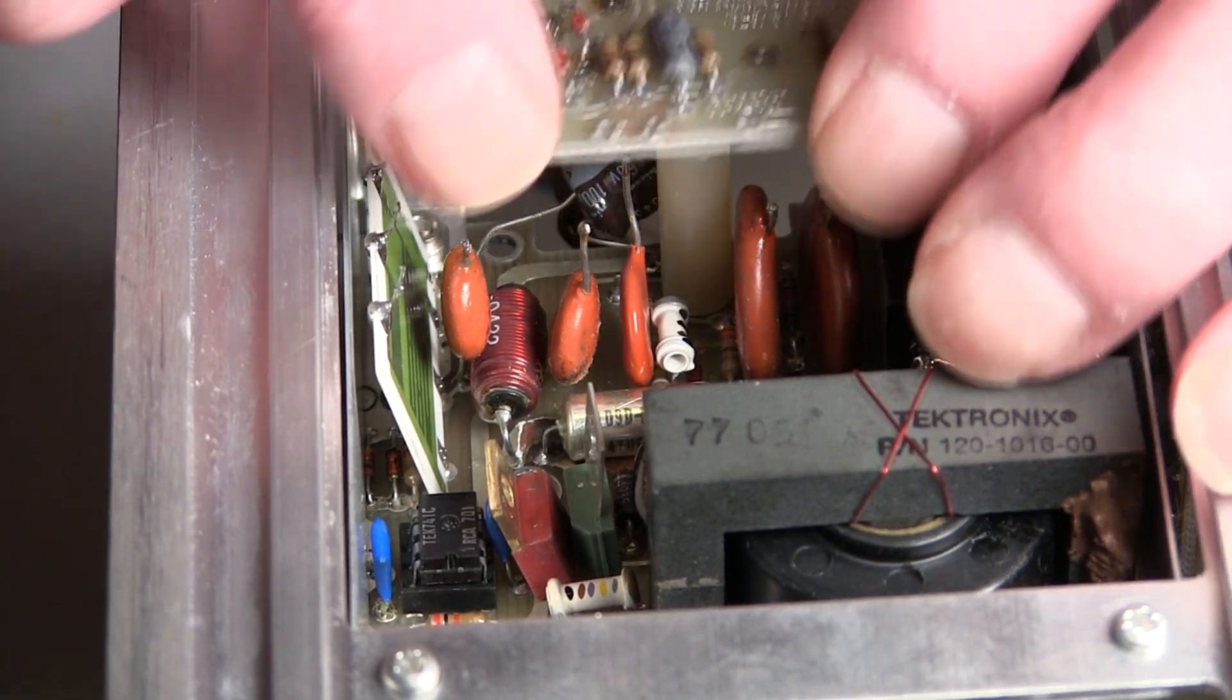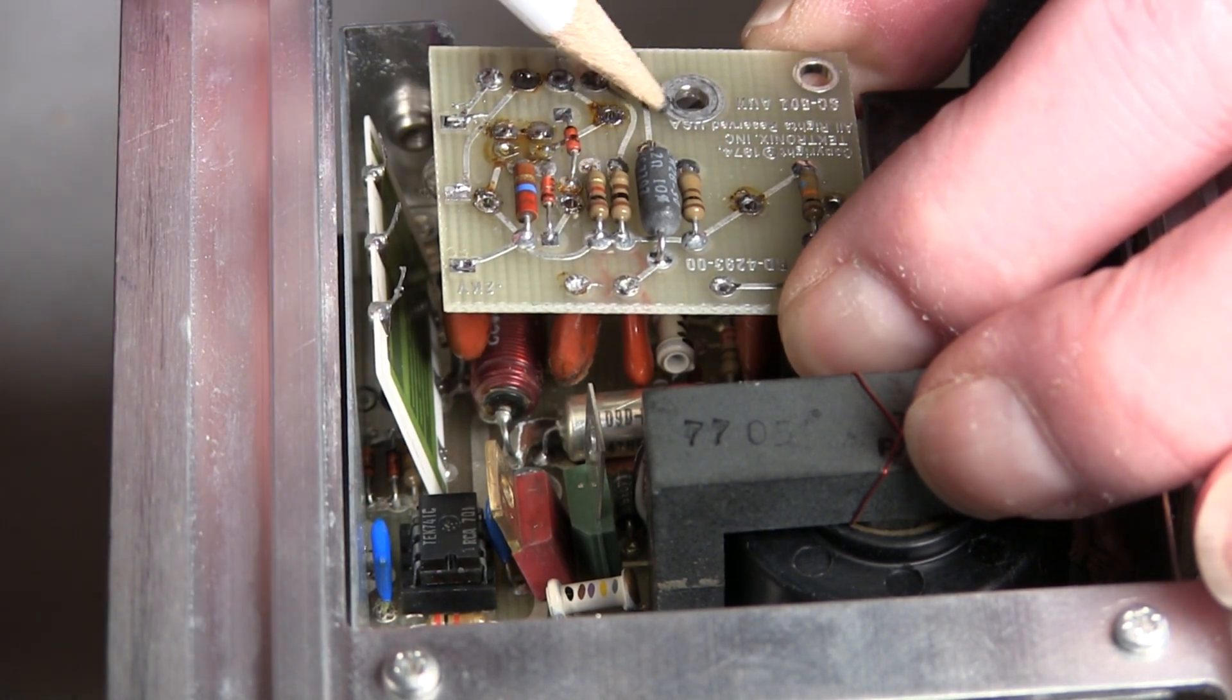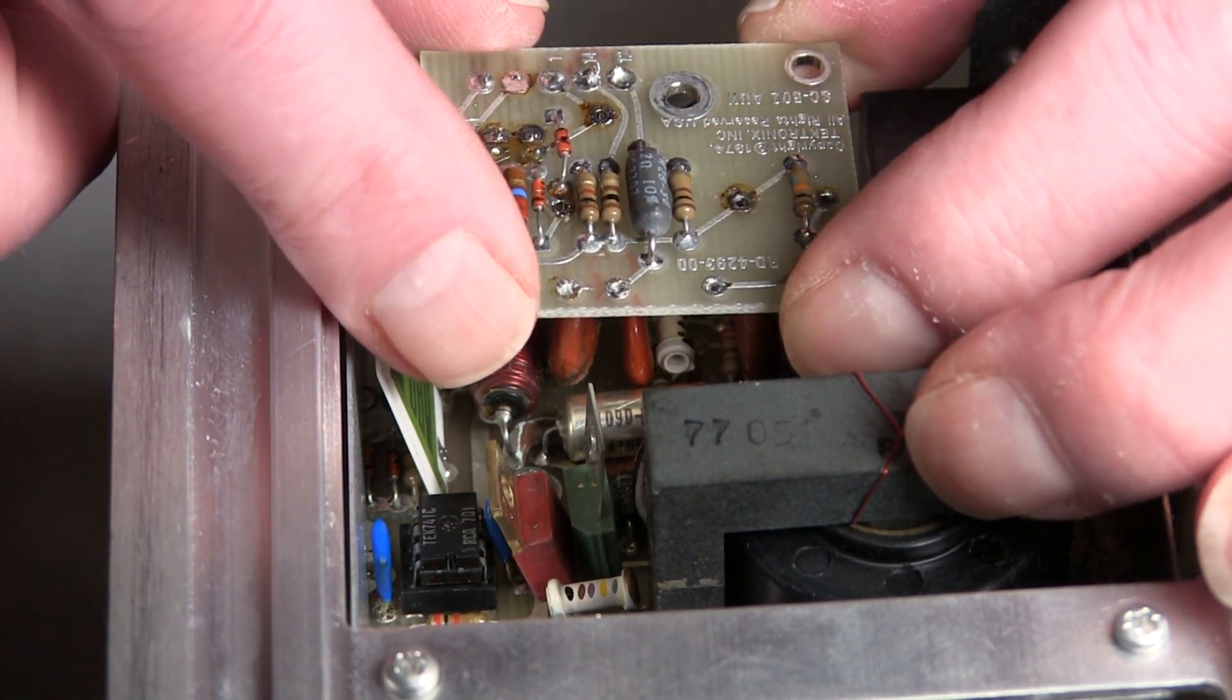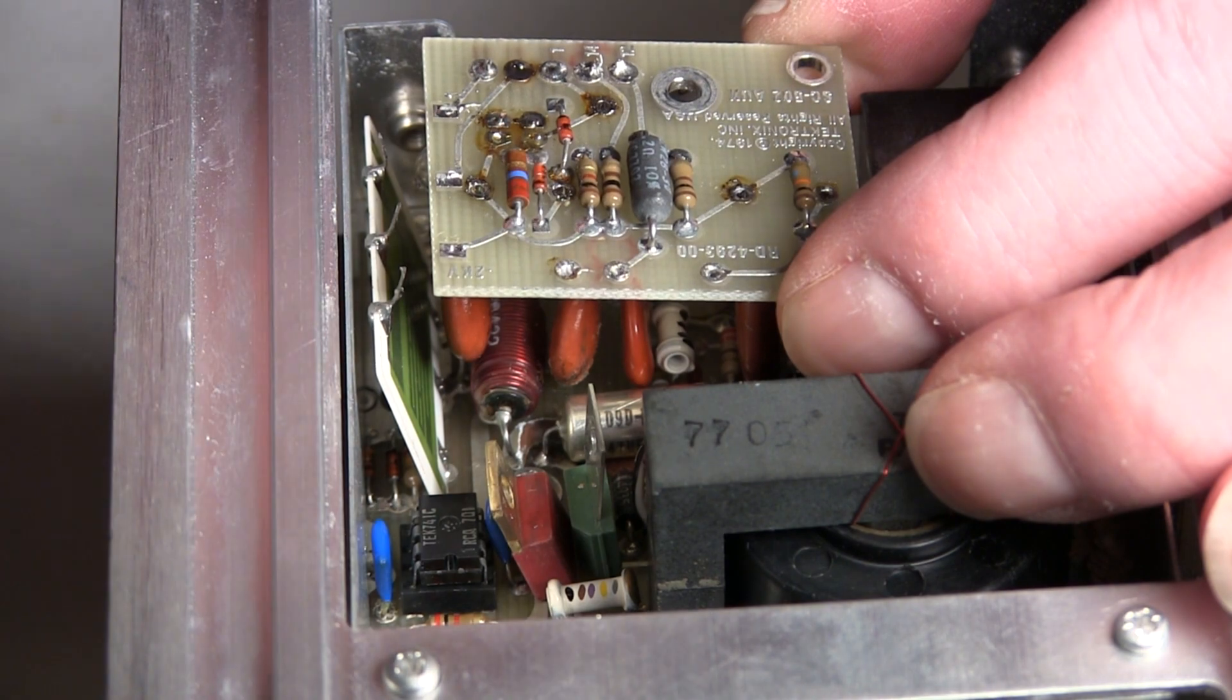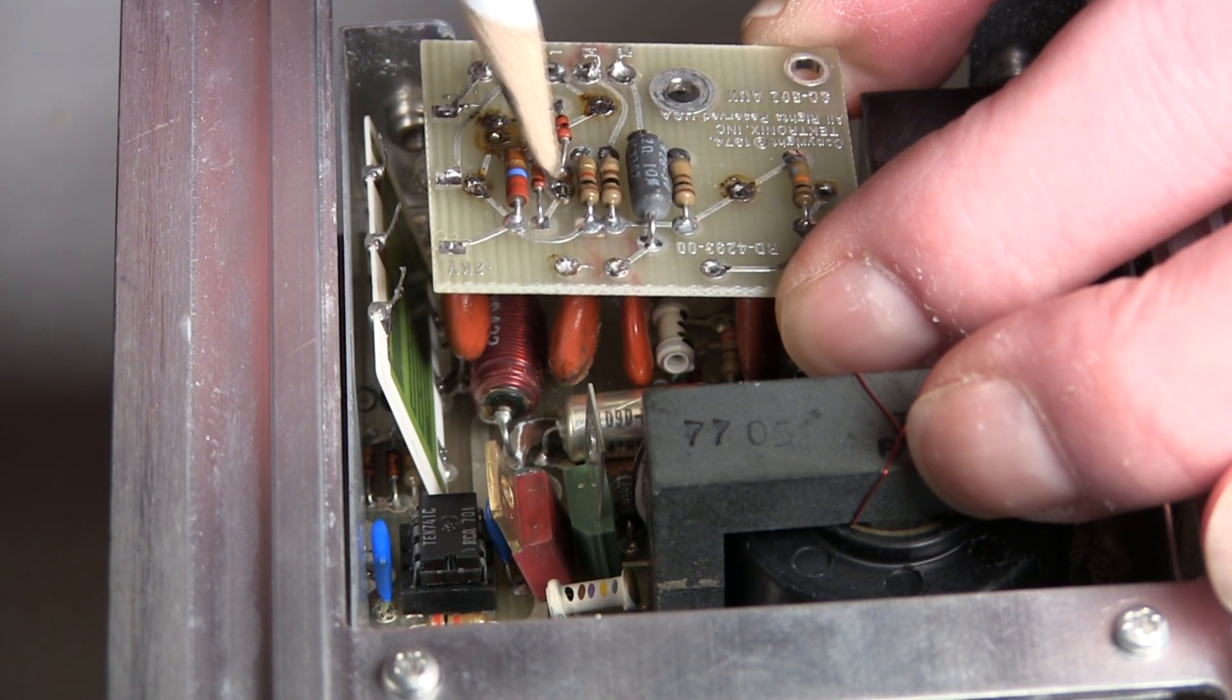Once you get the board in place then put the screw in here to hold it down and then solder the five wires.